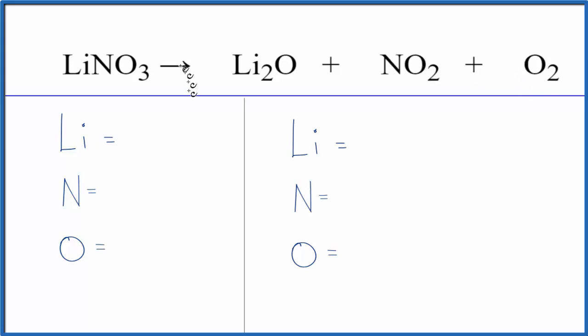Let's count the atoms up and see what we can do though. We have one lithium, one nitrogen, three oxygens. Product side, two lithiums, one nitrogen, and then the oxygen. We have one, two, three, four, five. Five oxygens.